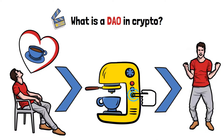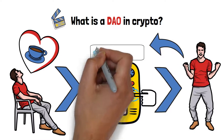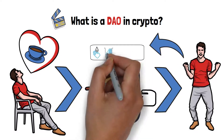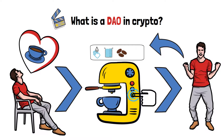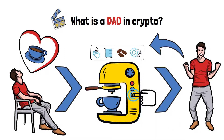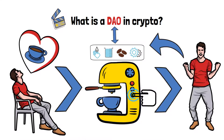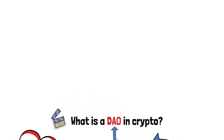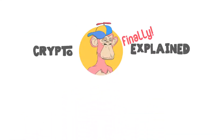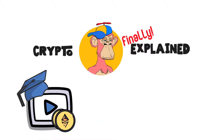While the machine does all the work for you, you still need to clean it, refill it with water, add coffee beans, and perform general maintenance. In essence, this example is the perfect illustration of how DAOs work. Allow me to welcome you to Crypto Finally Explained, the top YouTube channel for crypto-related education.